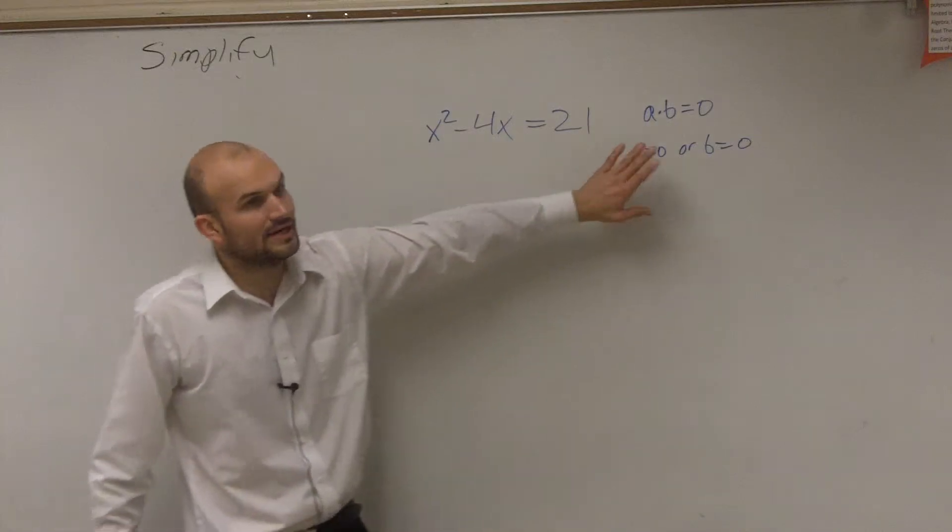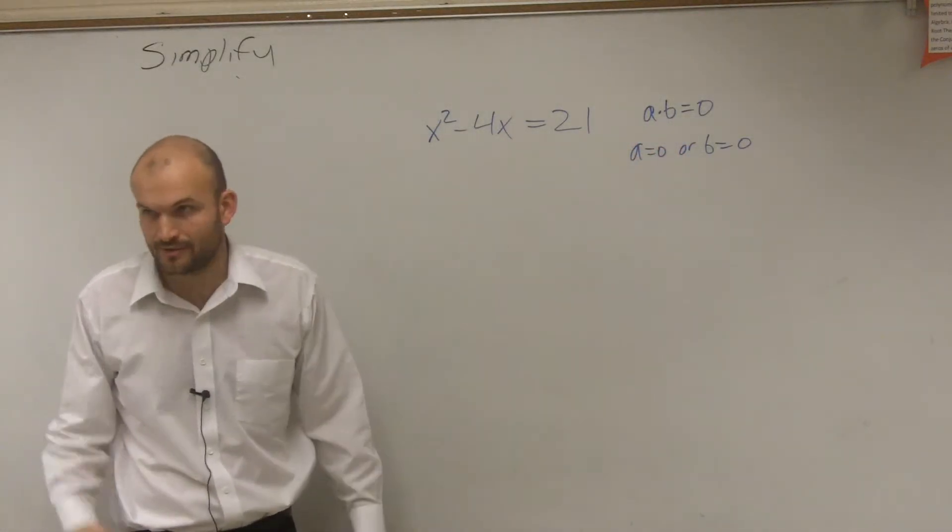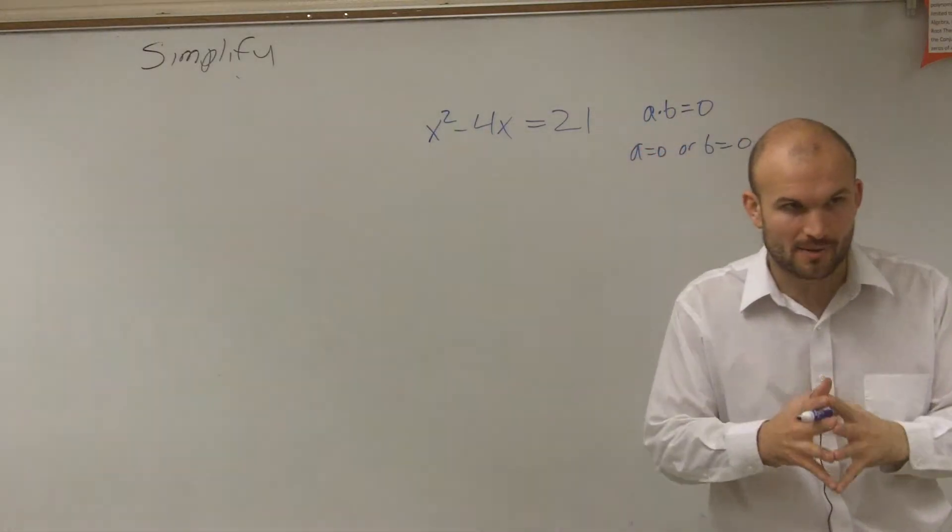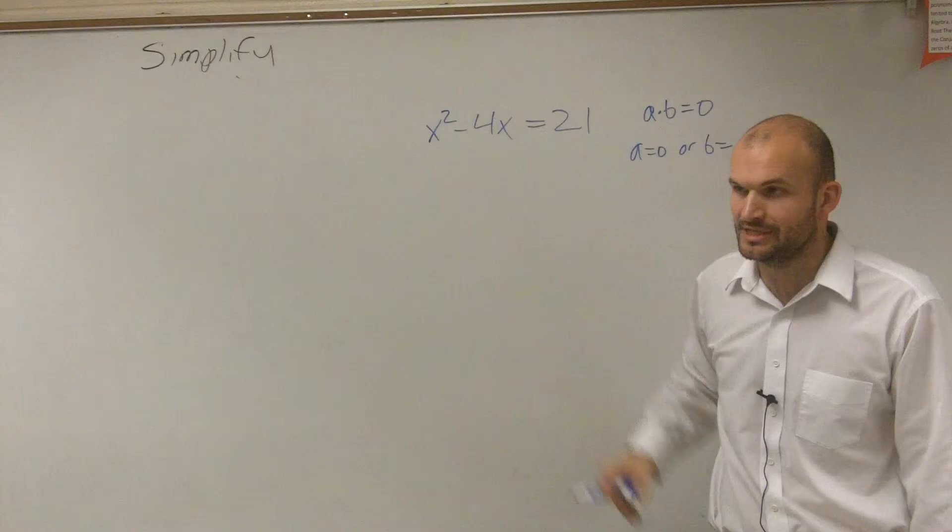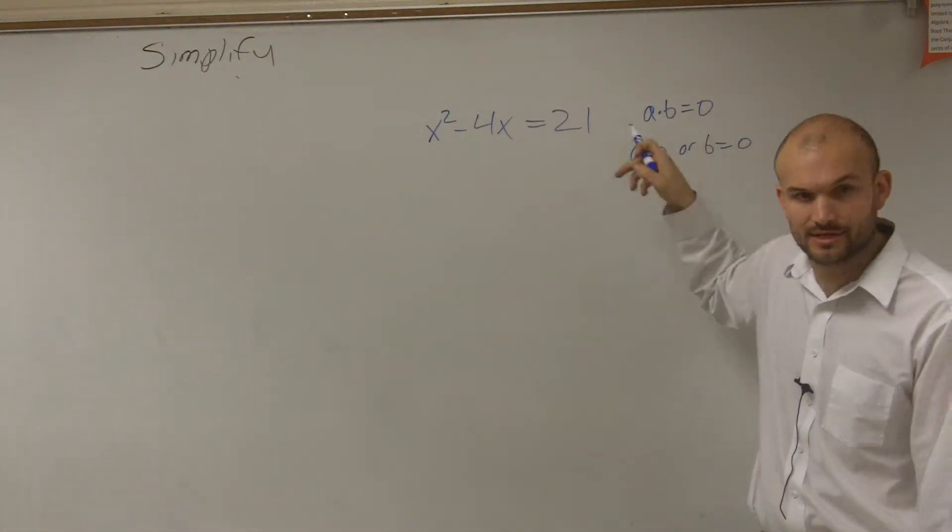So what that means is if I want to use the zero product property, I've got to have my equation equal to 0. I'll say that one more time because it's very important: to apply the zero product property, you have to have your equation equal to 0. You can't factor this when it's equal to a number. We need it to be equal to 0.